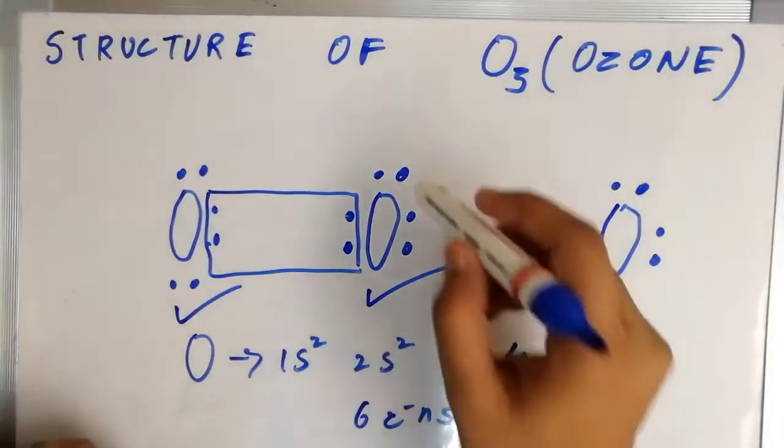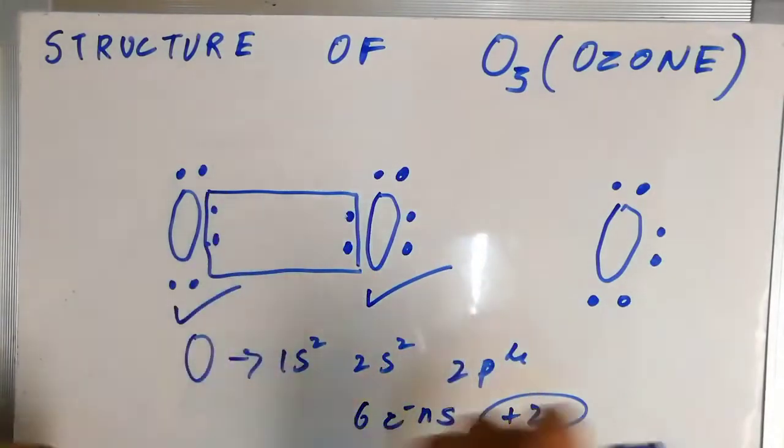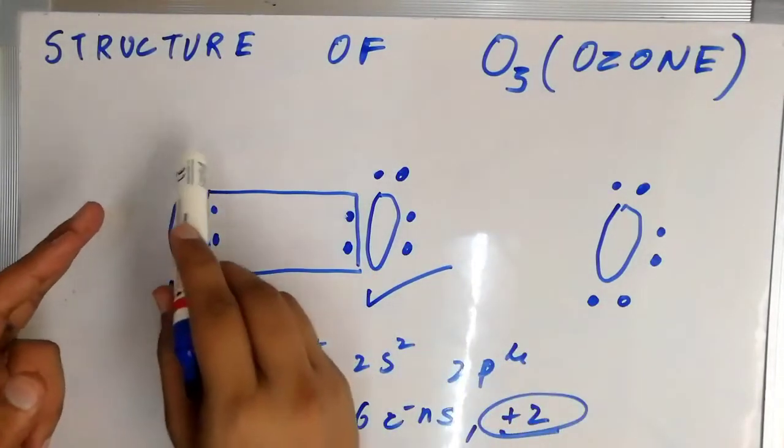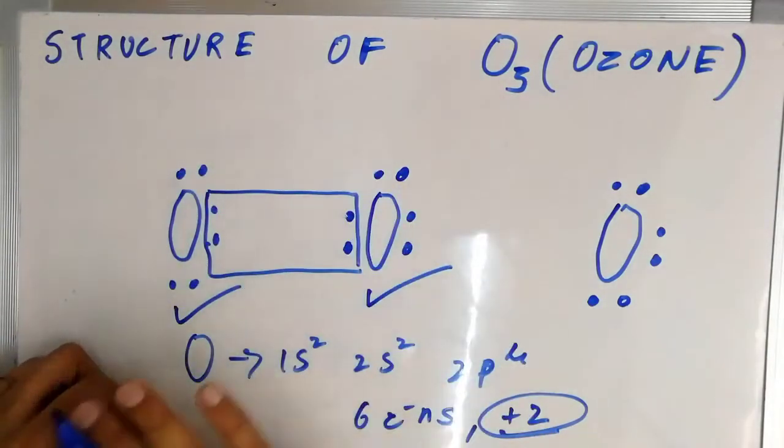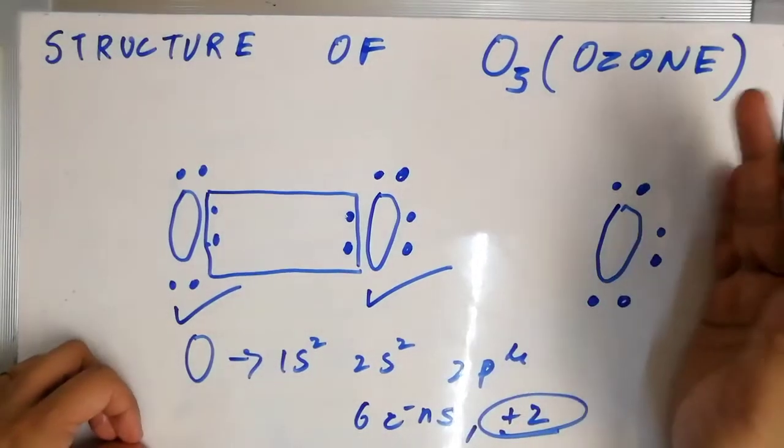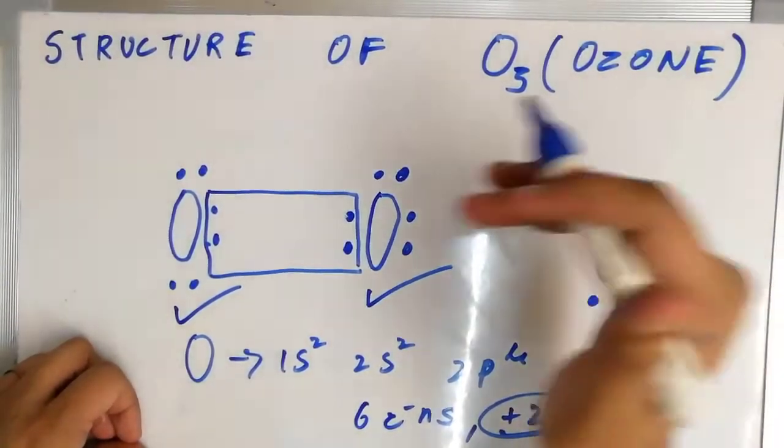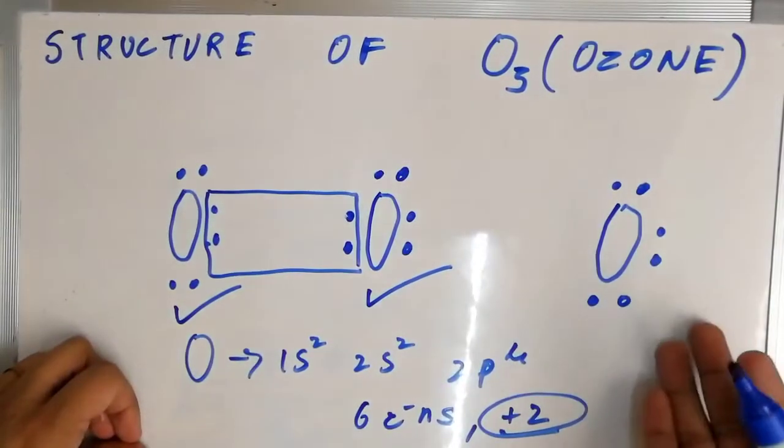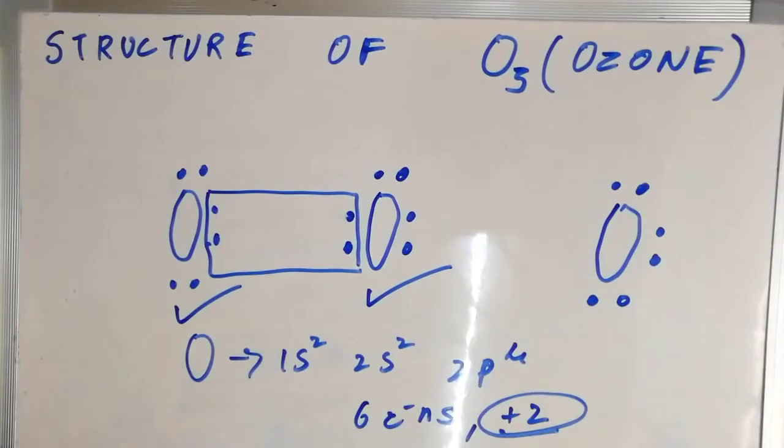Now for this one one two three four five six seven eight. So these two oxygen atoms have gained stability. Now what about this one because for the formation of ozone? There are three oxygen atoms. So how are we going to fit this one into the whole molecule, the whole structure?